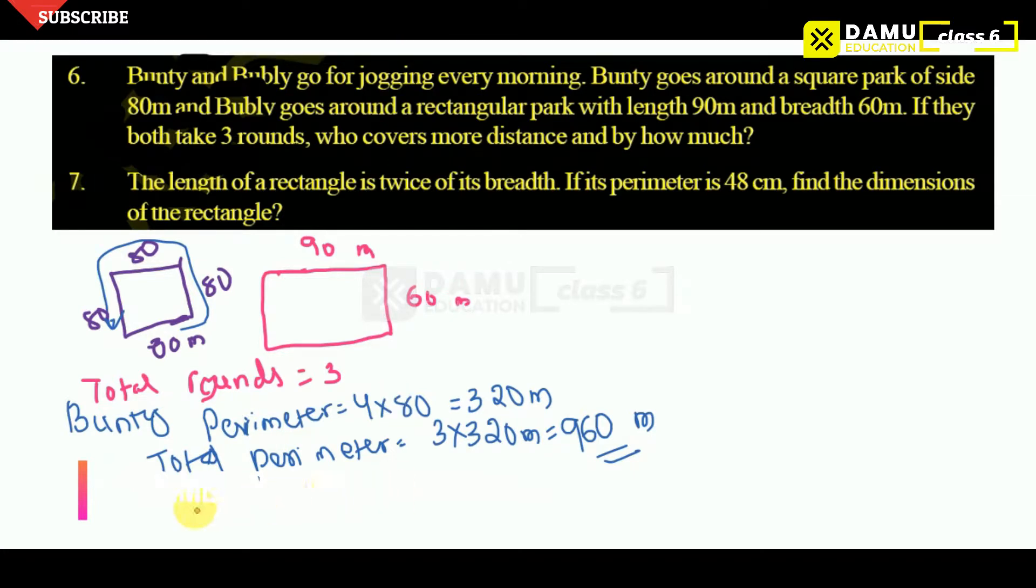Next, we are going to check with Bubbly. So Bubbly perimeter will be, we are having formula that is 2 into L plus B. So 2 into L is what here? 90 plus breadth is what here? 60. Then what will come? 2 into 150 we will get. So 90 plus 60, 150. 2 into 150 that is 300 meter.